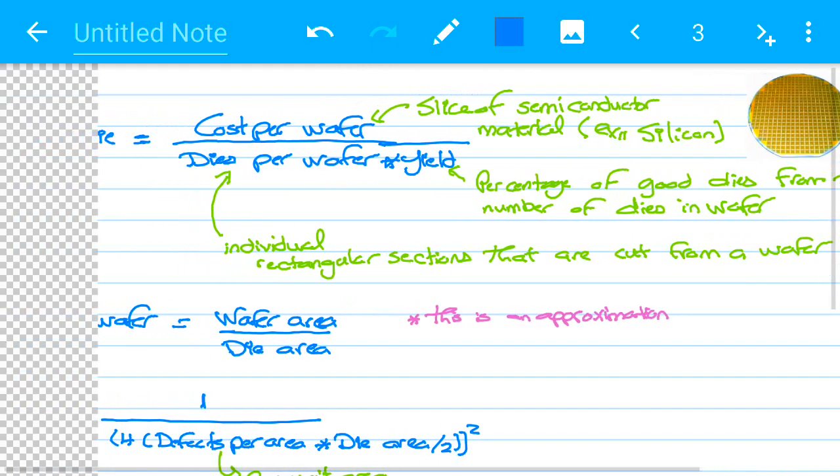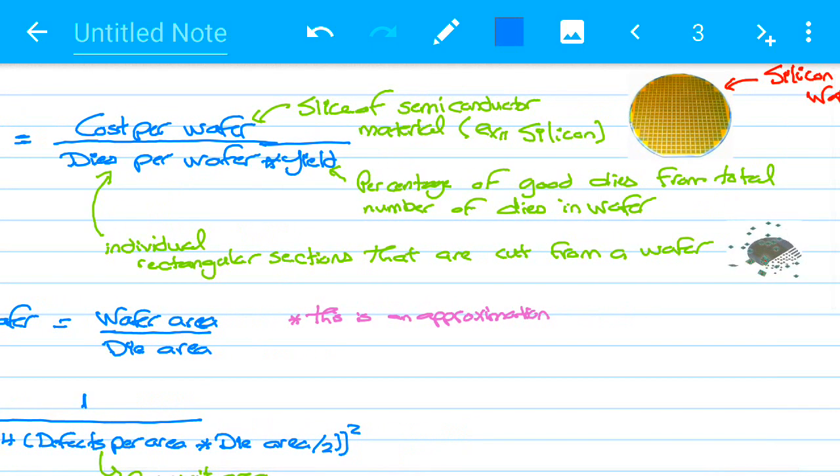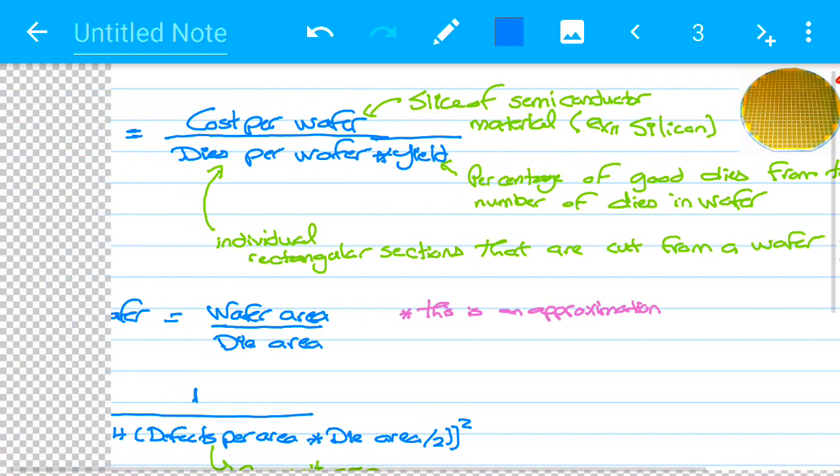So the yield is the one remaining. What's the yield? The yield is, as the name implies, the percentage of good dies from the total number of dies in the wafer.